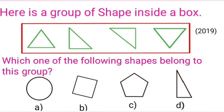Here is a group of shapes inside a box. The box contains triangles. Which one of the following shapes belongs to this group? The answer is a triangle, so option D is our correct option.